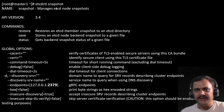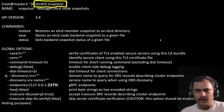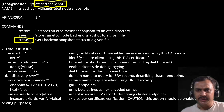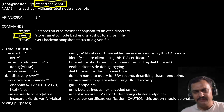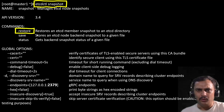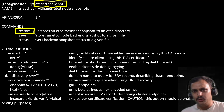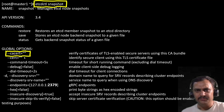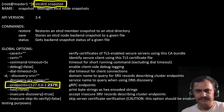After that if you execute etcdctl version you will observe the latest version in the output. Once this package is installed, you can execute etcdctl snapshot and press enter to see the available subcommands. The main ones are: status — gets the backend snapshot status of a given file; save — takes an etcd node backend snapshot to a file; and restore — restores an etcd member snapshot to an etcd directory.